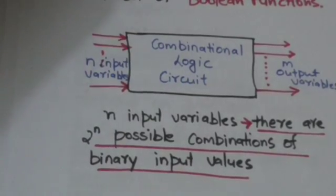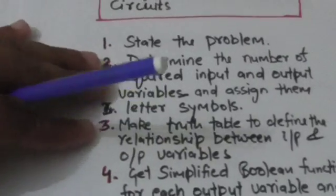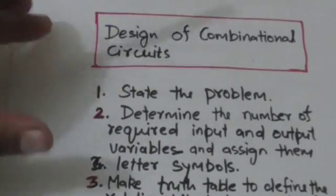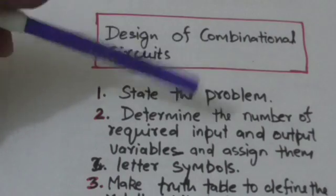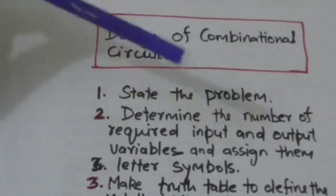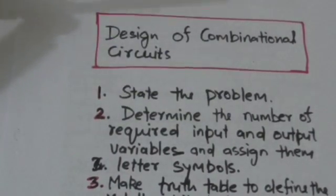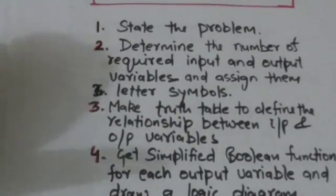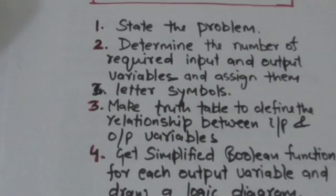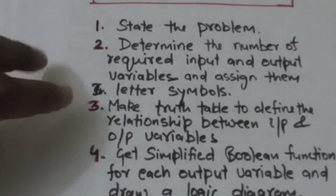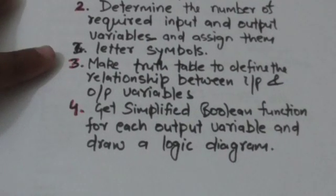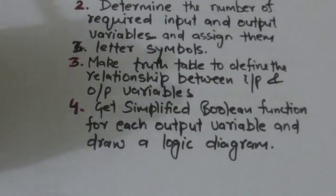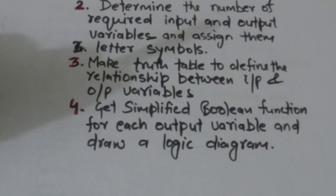Now, how do we design combinational circuits? First, state the problem. Then determine the number of required input and output variables and assign them letter symbols. Make a truth table to define the relationship between input and output variables. After that, get simplified Boolean functions for each output variable and draw a logic diagram.